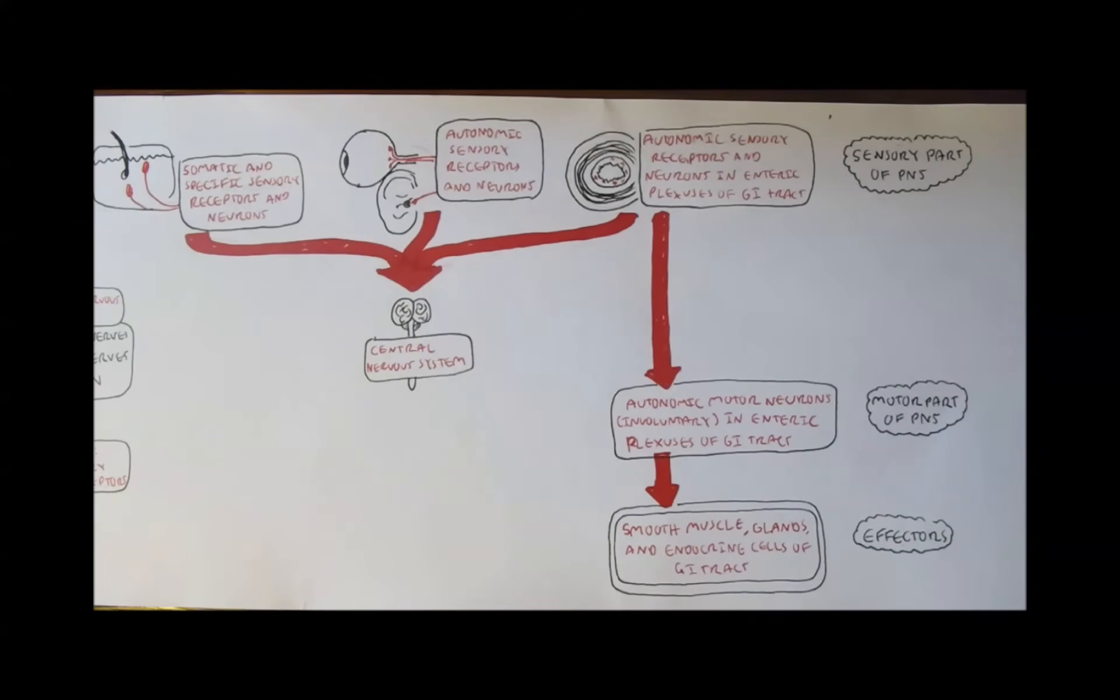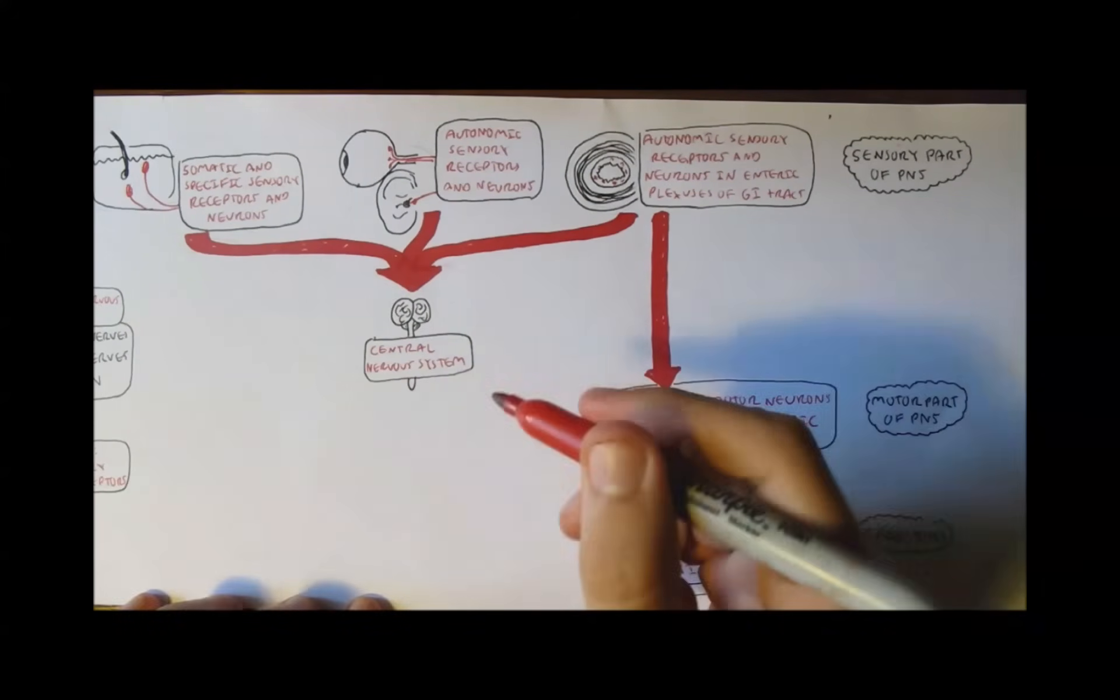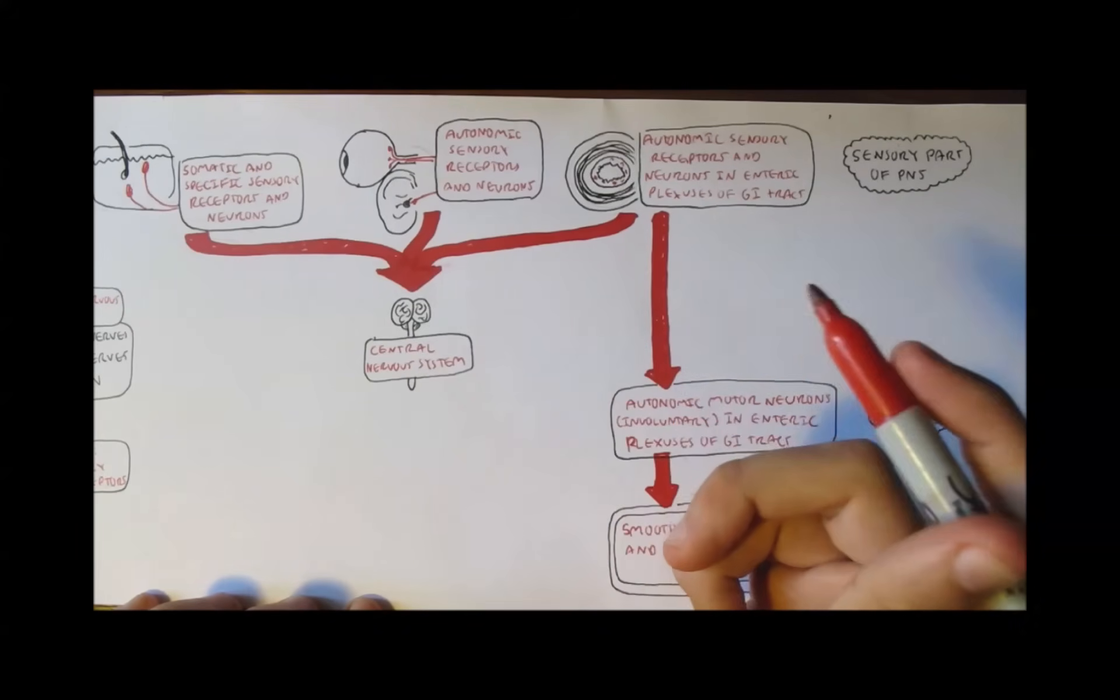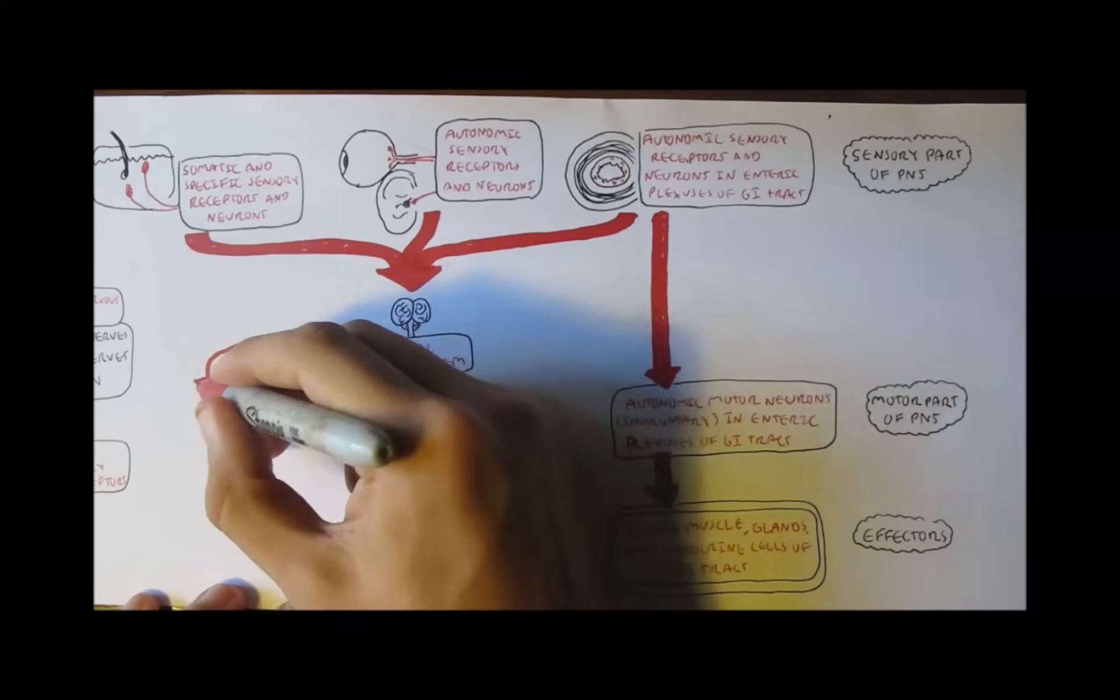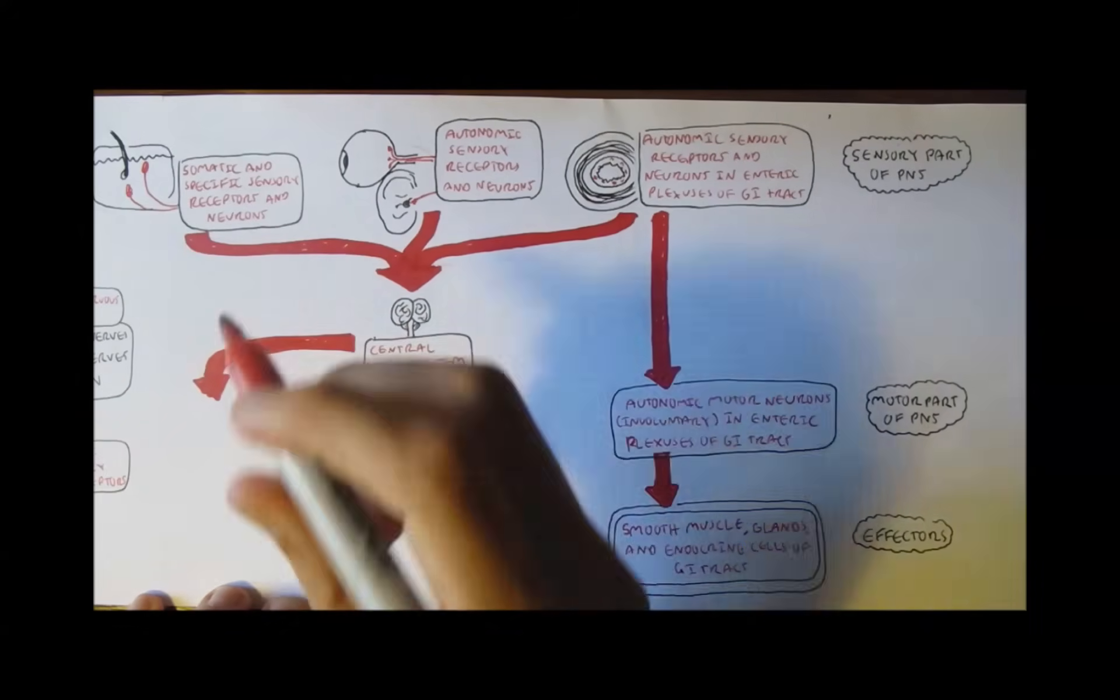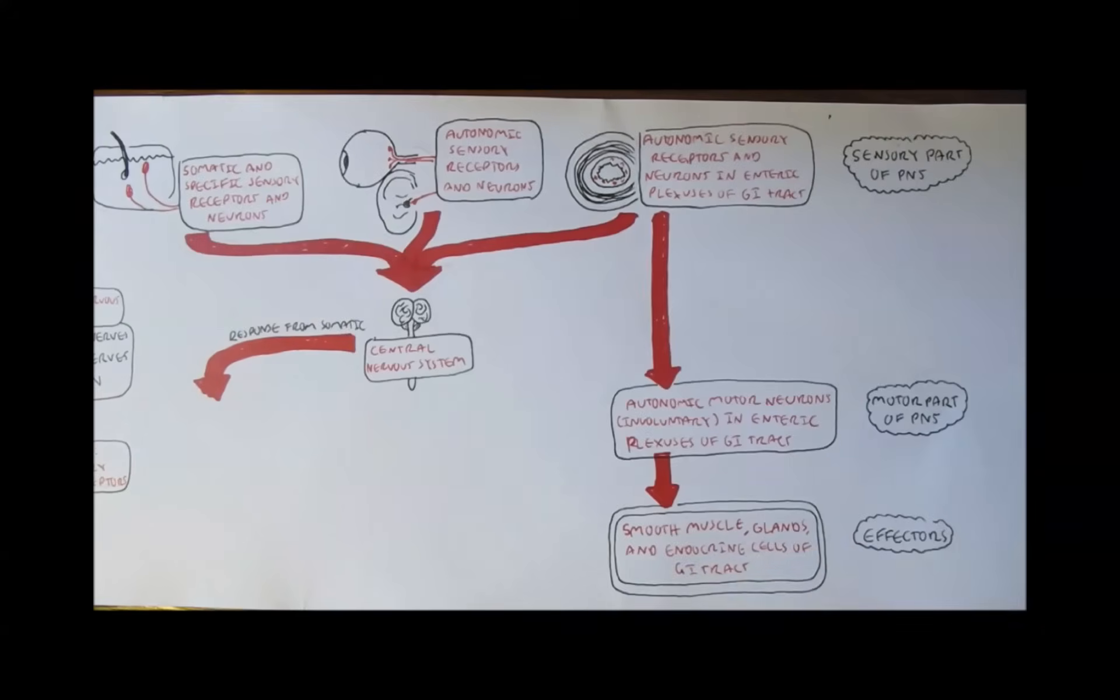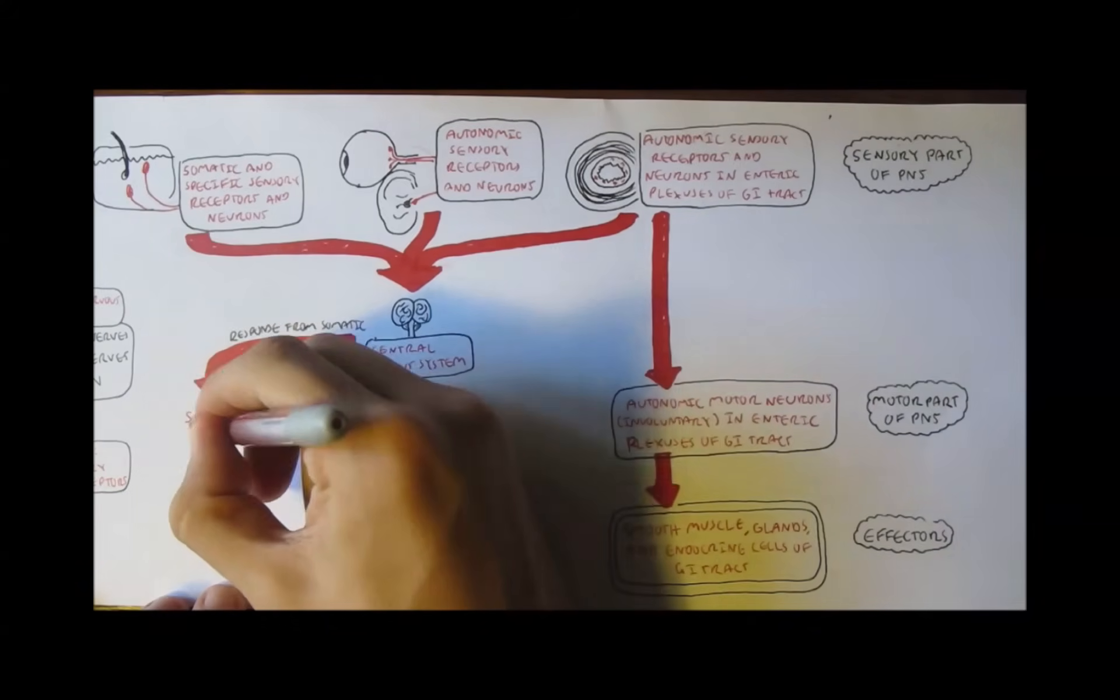After receiving information from the somatic or autonomic sensory receptors, such as the ones under your skin or in your ears or eyes, the CNS will voluntarily or involuntarily process this information. After processing it, it can act in two ways.